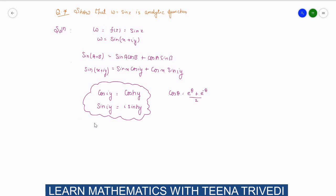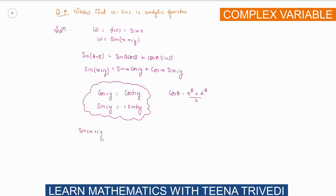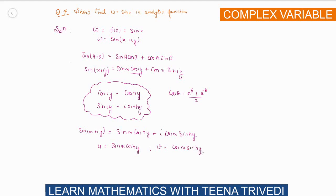So sin(x + iy) becomes sin(x)·cosh(y) plus i·cos(x)·sinh(y). We have separated the real part and imaginary part. We put u equal to sin(x)·cosh(y) as the real part, and v equal to cos(x)·sinh(y) as the imaginary part, writing w as u plus i·v where u and v are real functions.